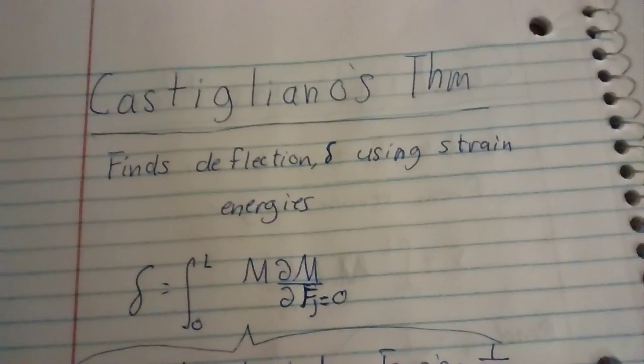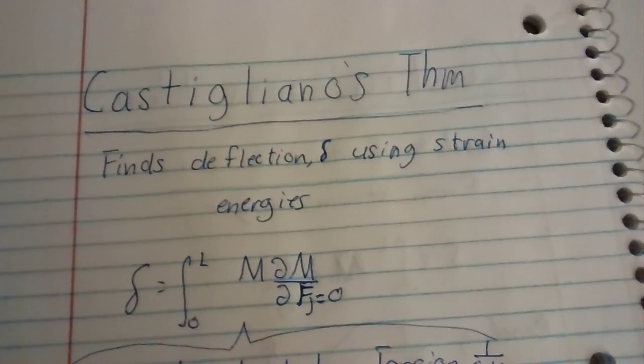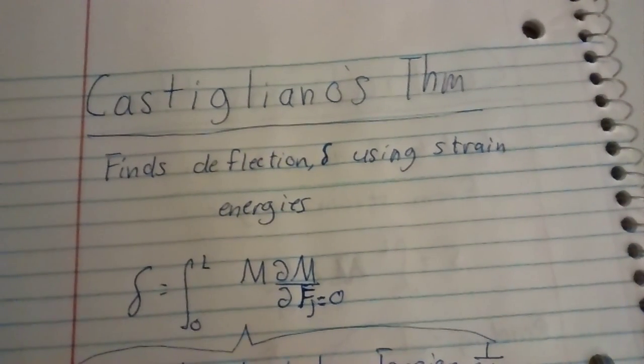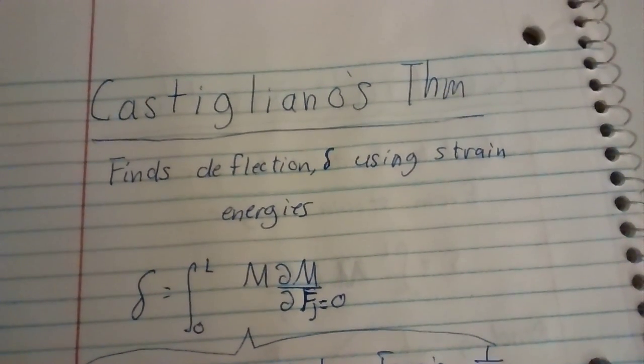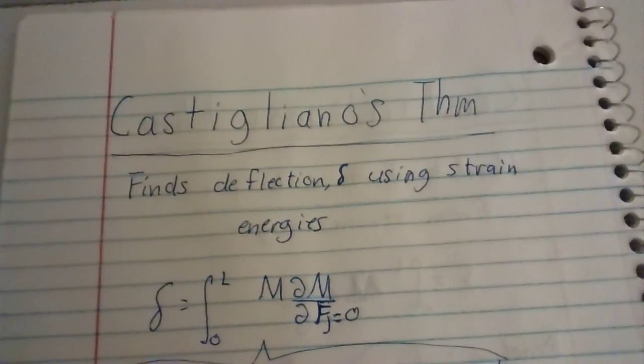Alright, now let's go down to the equation. Delta is equal to the integral going from origin to the length of the object to the M moment of the partial moment over the partial Fj or the dummy force, which will be equal to zero. Yeah, that's why it's really weird.